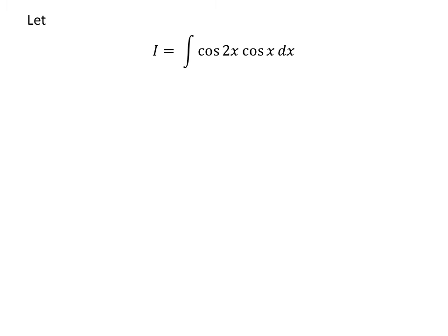Let us assume I is equal to the integral of cosine of 2x times cosine of x with respect to x. We know the trigonometry identity: cosine of 2x is equal to 1 minus 2 times sine squared of x.